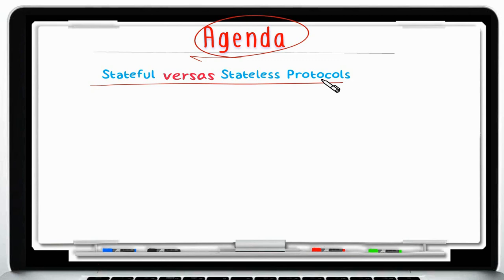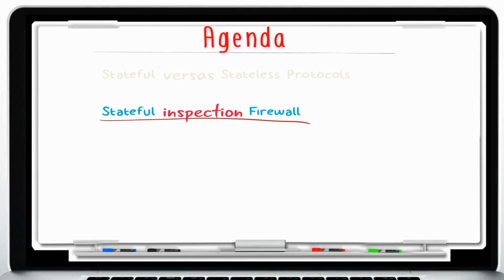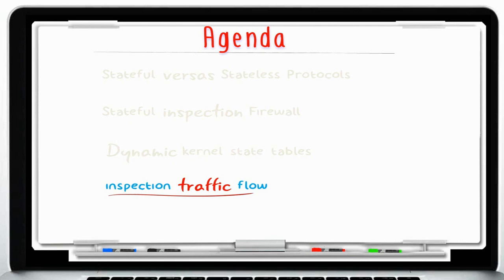To start off, we will discuss the different characteristics between stateful and stateless protocols, to ensure we have a basic understanding of how protocols work. Then we'll break down the Stateful Inspection Firewall and how it keeps track of the state of protocols, including the functions performed by the rule base and the kernel tables. Next we'll do a deep dive into the kernel tables, discussing how the firewall tracks all known connections in dynamic kernel tables, how a packet flows through the kernel, and the connection table including different timeouts, expirations, and what causes packets to be out of state.